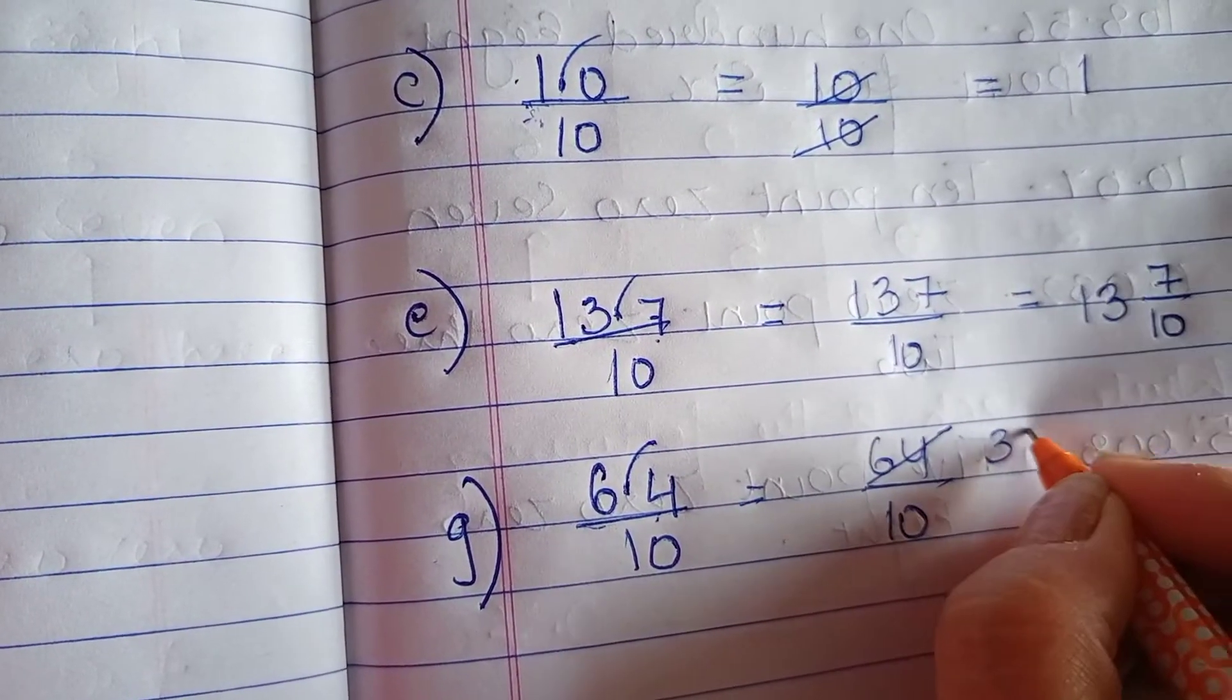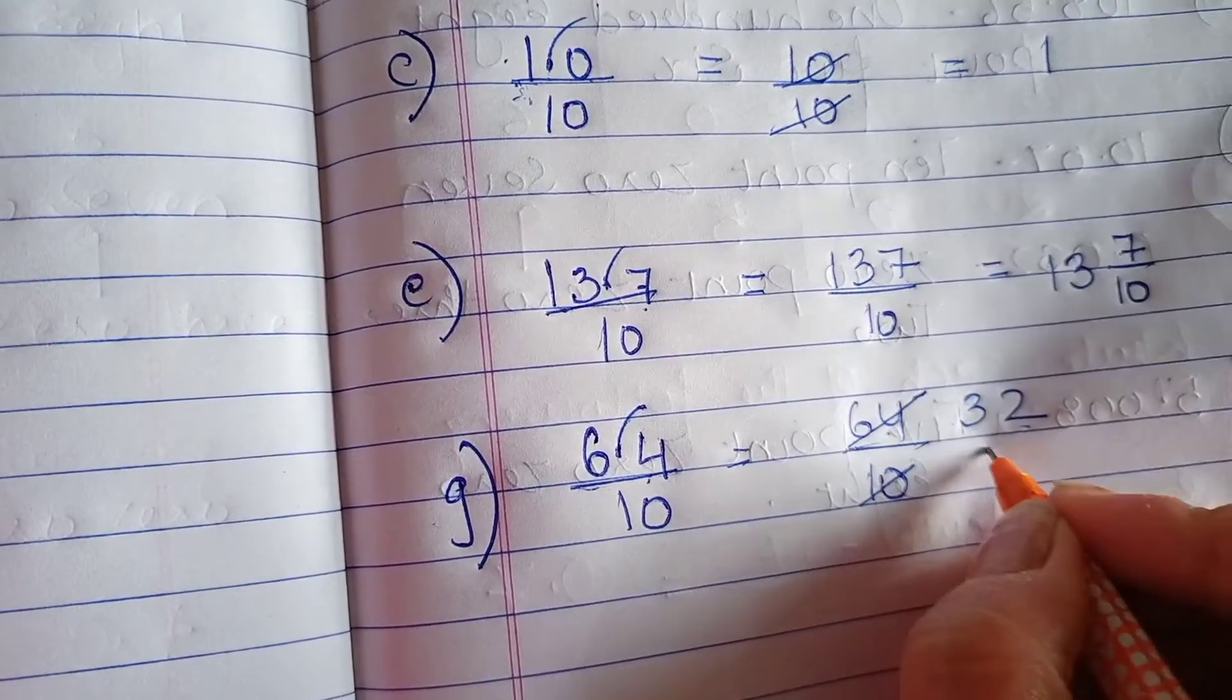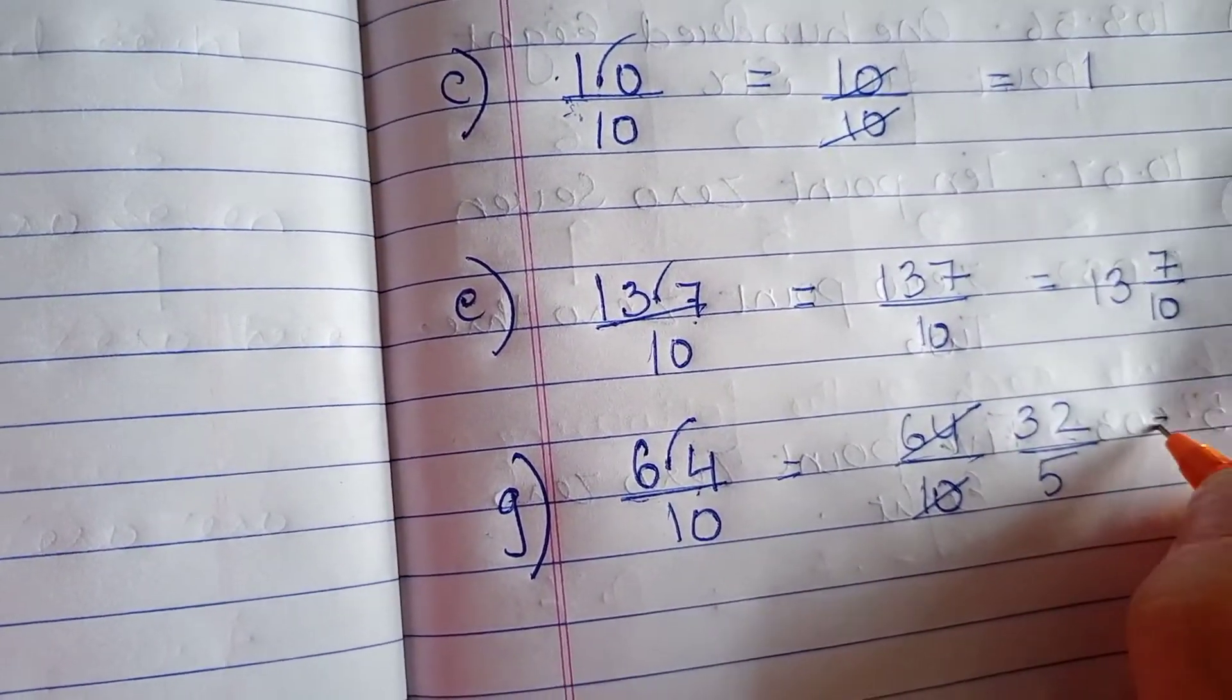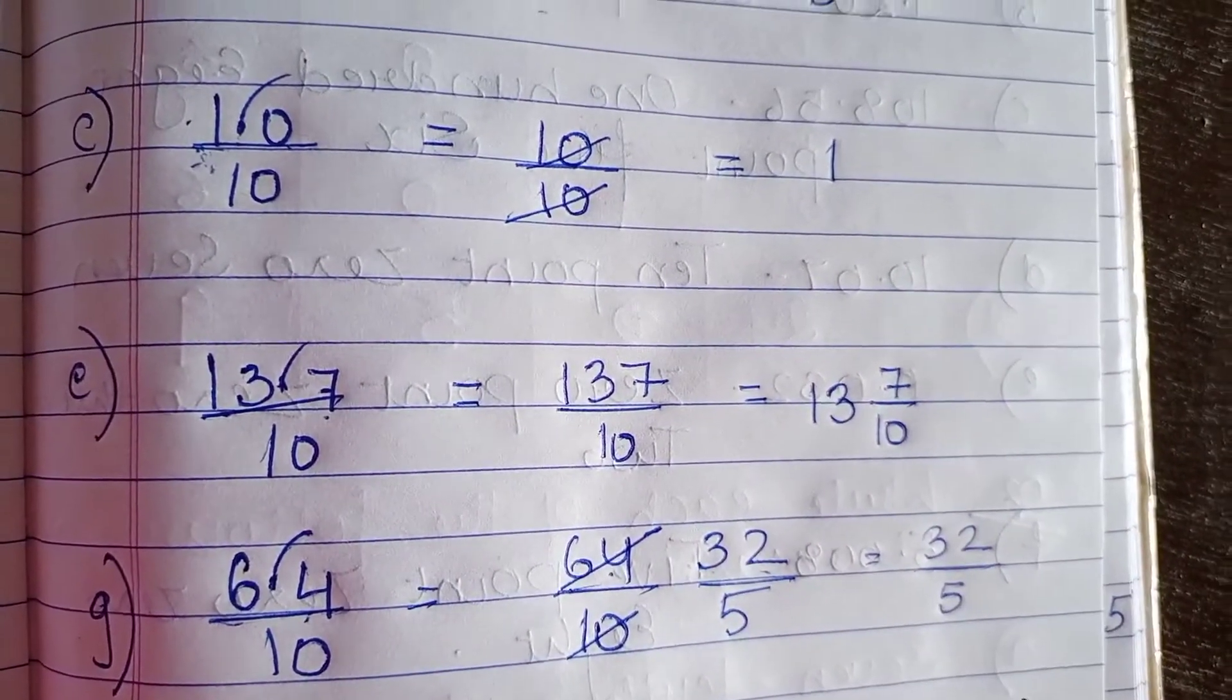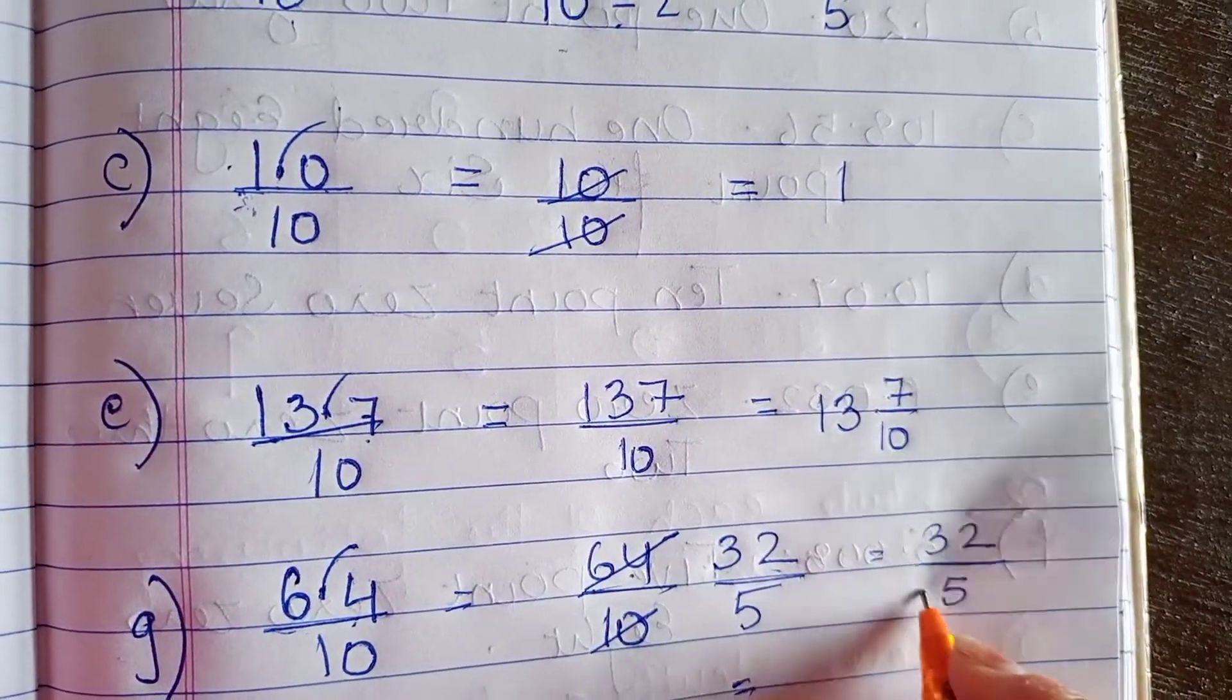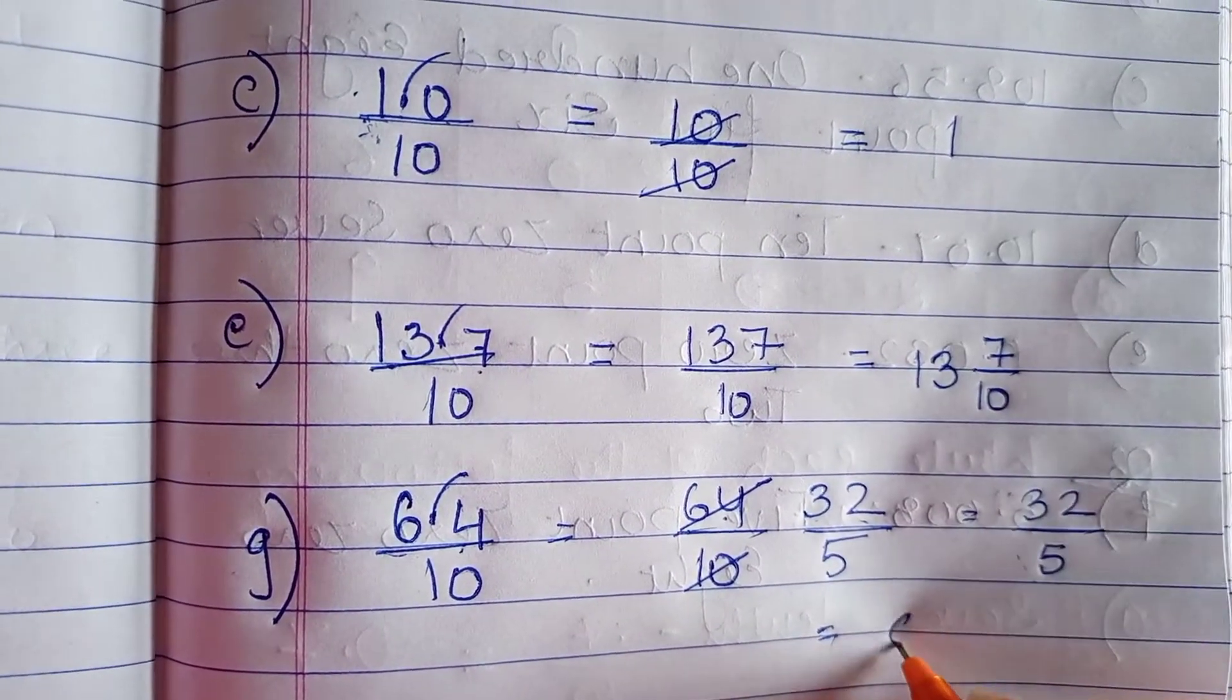It will be divisible by 2. 2 3s are 6, 2 2s are 4, 2 5s are 10. So our answer is 32 upon 5. If you will see, whenever you see an improper fraction, what you have to do? You just have to convert it into mixed fraction. 32 divide by 5 is 6.